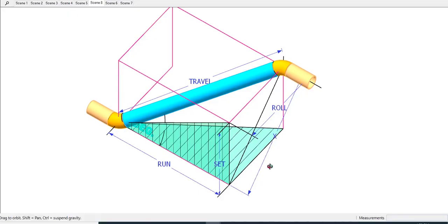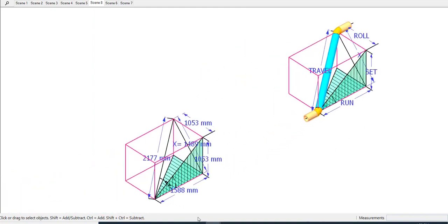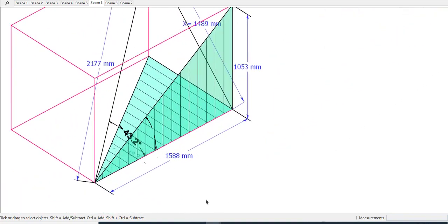The formula is X equals root of the sum of the squares of the roll, set, and the run. Confusing? No problem.